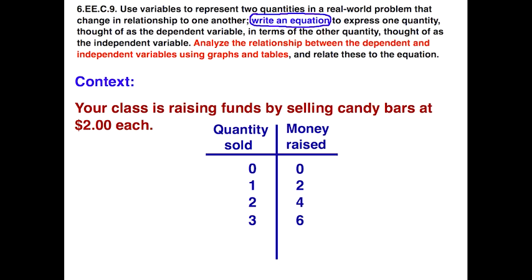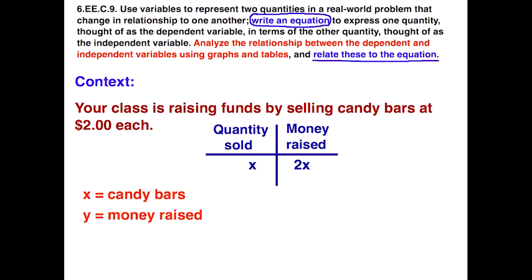Now we need to work on writing an equation. If our unknown X is how many candy bars that we sell, this pattern seems to be that it's doubling. And of course, that's from the $2 each. So it stands to reason that to get the Y value, the amount raised, we simply take the number of candy bars and multiply by 2. So if we let X be the candy bars and Y is the amount raised, then our equation should be Y = 2X.